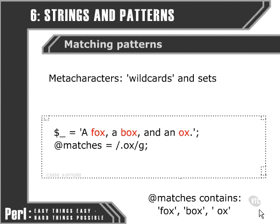Now there's something possibly a little confusing about the last one. If you look at how I've spelled out each of the elements contained within the matches array, you'll notice that I've included a space before the final word, ox. That's not a typo. When Perl is searching for the pattern, it matches a space character exactly the same way as it matches any other character. It doesn't treat space as simply a gap between other characters — it treats it as a character in its own right. So we've matched space-O in the same way as we've matched B-O and F-O.